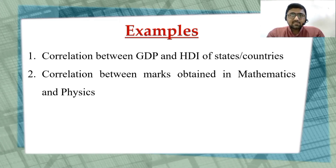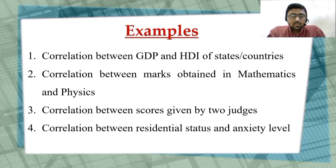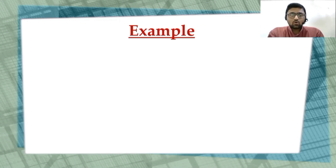We can also use rank correlation to examine the association between marks obtained in mathematics and physics — whether students scoring higher in mathematics also score higher in physics. A third example is the correlation between scores given by two judges in a competition. A fourth example is the correlation between residential status — metro city, urban, semi-urban — and anxiety level, examining whether higher residential status is associated with higher anxiety.